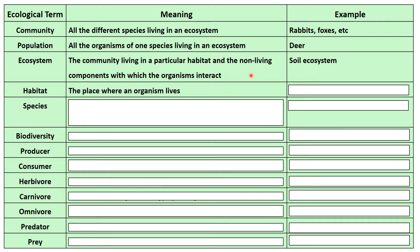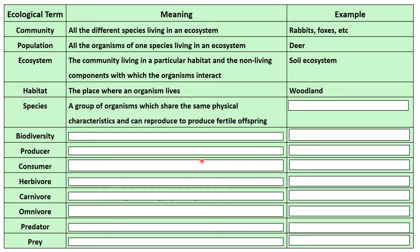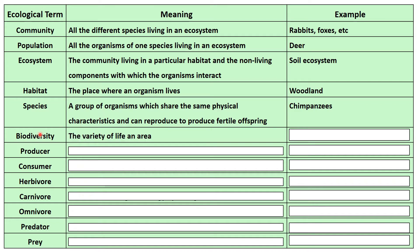Habitat is simply the place where an organism lives, like woodland species. Species has two parts to its definition: first, it's a group of organisms which share the same physical characteristics, so they look similar; and second, they can reproduce to produce fertile offspring. Fertile means that the offspring can make babies — the opposite of that being sterile. And then biodiversity is the variety of life in an area. A wild meadow would have high biodiversity, while a lawn with just grass — one species — would have low biodiversity.